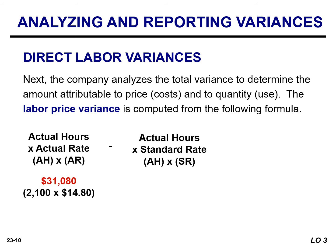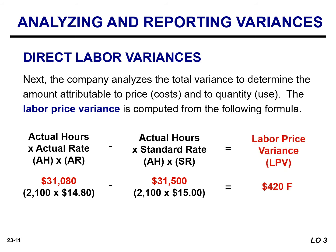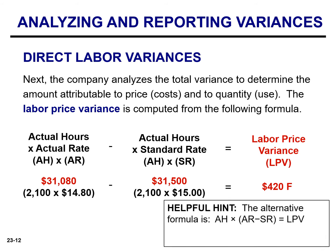The labor price variance is calculated as the difference between the actual amount paid and the amount that should have been paid for the number of hours worked. We use actual hours of 2,100 and multiply that by $15, which is the standard rate for labor. The labor price variance is $420, and this is favorable because the actual rate is less than the standard rate.